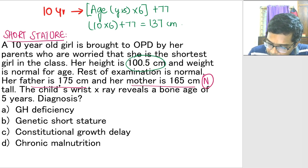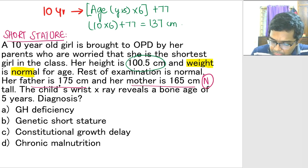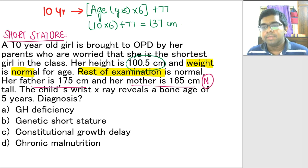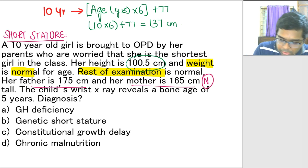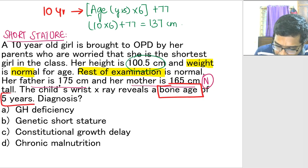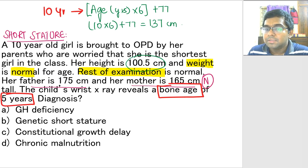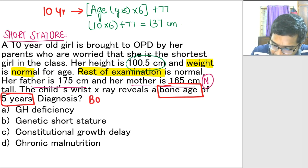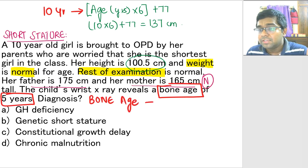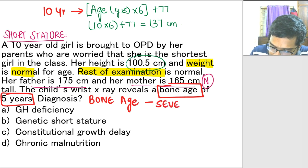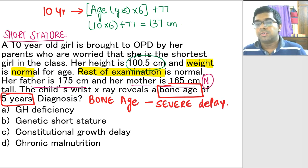Keep looking for the clues. Weight is normal — only height is affected. The rest of clinical examination is also normal, so no systemic problems detected. A very important clue is the bone age of 5 years. The child is 10 years but the bone age is only 5 years — a definite bone age delay, and not just one or two years difference but a five-year difference. This is a severe delay in bone age.